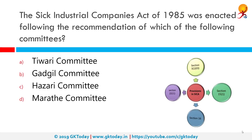The Sick Industrial Companies Act of 1985 was enacted following the recommendation of which of the following committees? The correct answer is Tiwari Committee. The Sick Industrial Companies Special Provisions Act 1985, also known as SICA, defined a sick industrial unit as one that had existed for at least five years and had incurred accumulated losses equal to or exceeding its entire net worth at the end of any financial year.